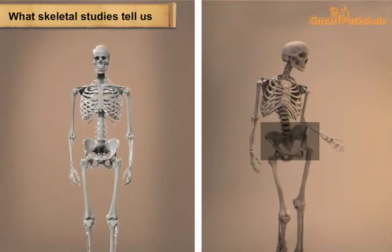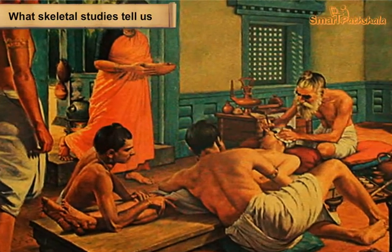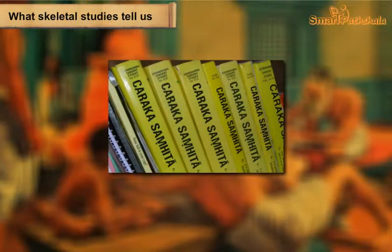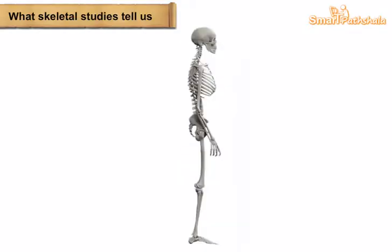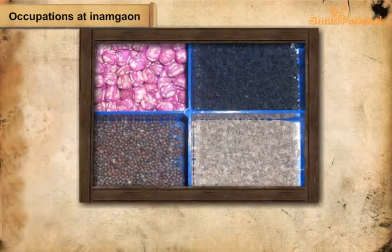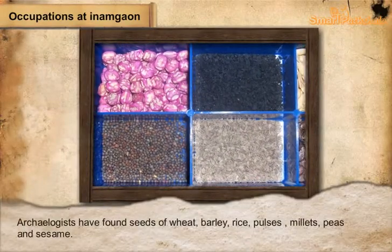The sex of a skeleton can be better determined from the bone structure, as the hip bone of women is larger. A renowned physician named Charaka wrote a book on medicine known as Charaka Samhita about 2,000 years ago, which states that the human body has 360 bones, which is larger compared to the 206 bones recognized by modern anatomy.